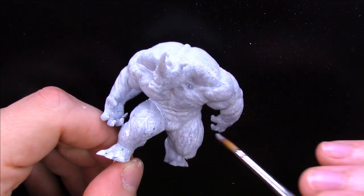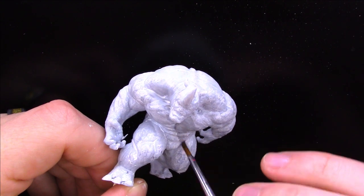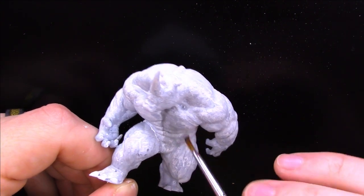I print and primer this model. Now to the base color. Well, that's easy. It's gray. I use a uniform gray and paint everything on him except his little face sticking out.